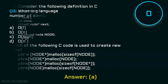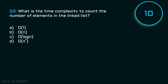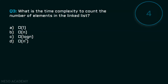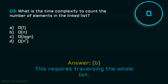Here comes question three. Your time starts now. Stop. The answer to this question is option B. This requires traversing the whole list, that's why option B is the correct option.